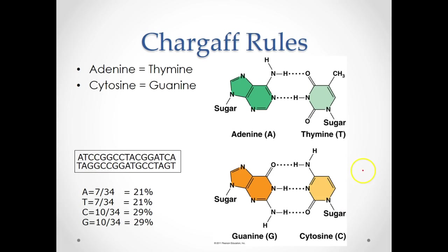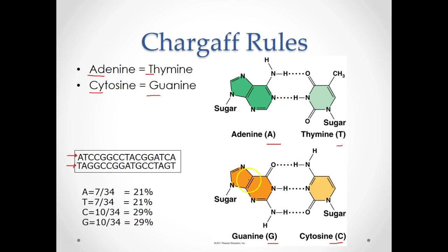For Chargaff's rules, the key thing to know is the base pair rules: adenine and thymine are complementary base pairs (A and T), and cytosine and guanine are complementary base pairs (C and G). If you count the number of A's and T's and the number of C's and G's in a DNA strand and its complement, A equals T and C equals G — both in numbers and in percentages. Adenine and thymine are held together by two hydrogen bonds, and cytosine and guanine are held together by three hydrogen bonds. These hydrogen bonds are weaker bonds that get unzipped and re-zipped during DNA replication and RNA transcription.